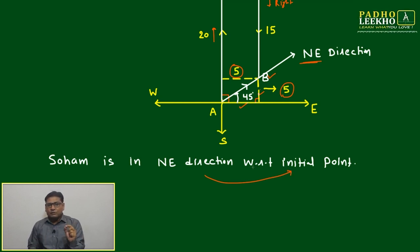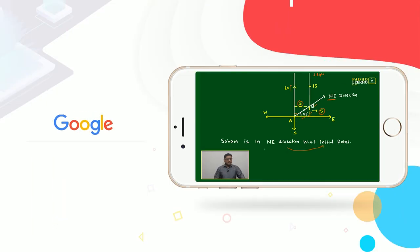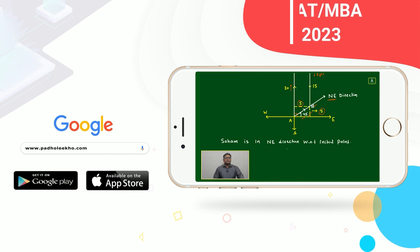If we are removing this initial point, then we can say Soham is in northeast direction with respect to initial point. If we are removing this initial point, then we can't say what is the exact positional value.